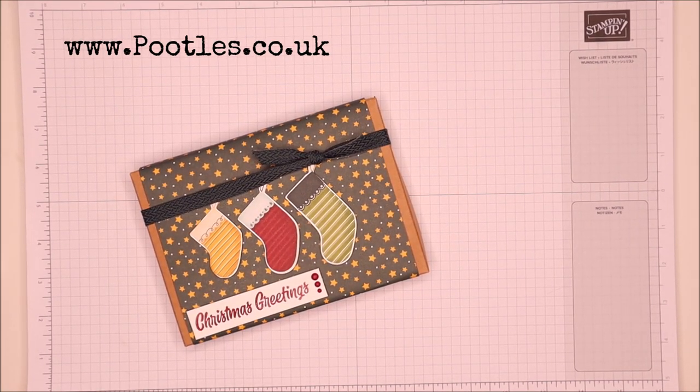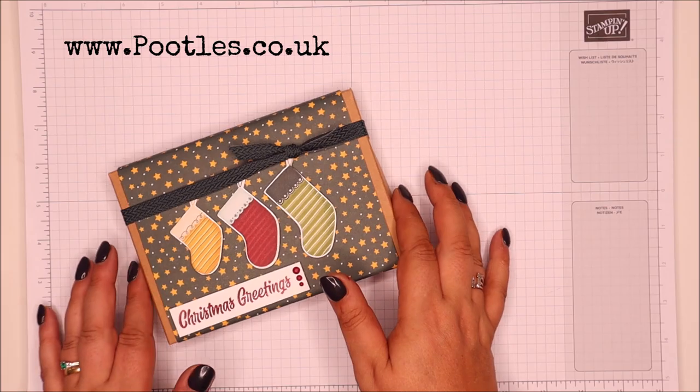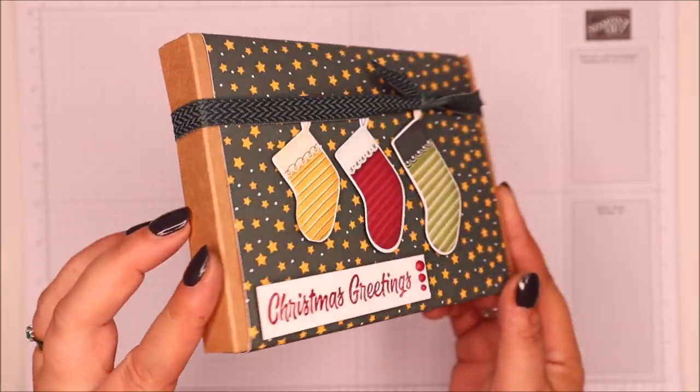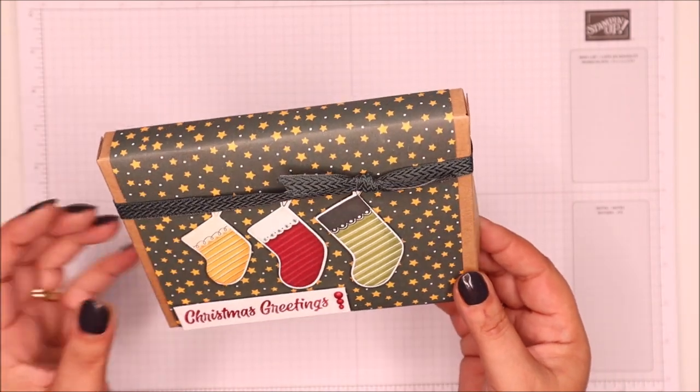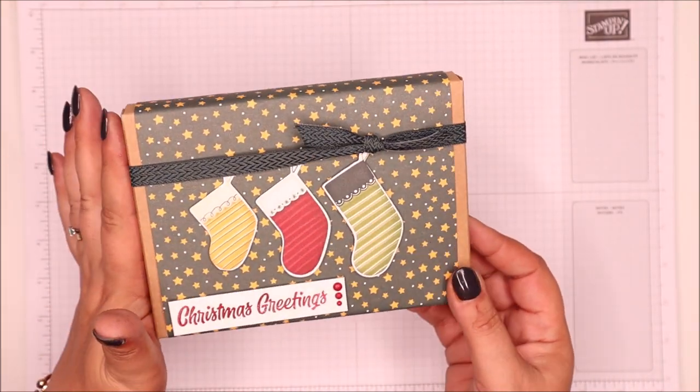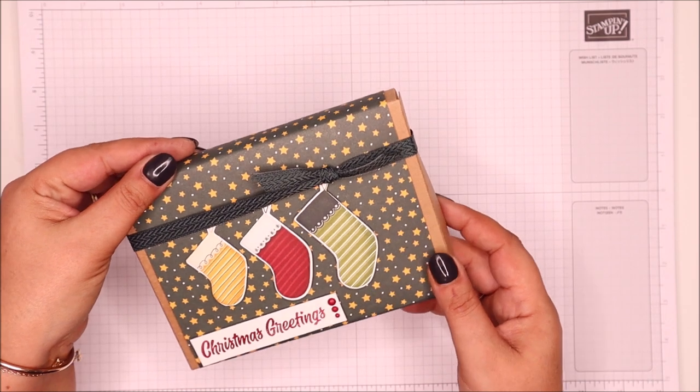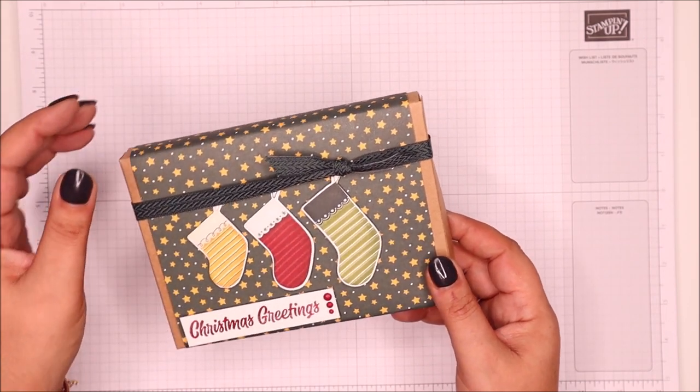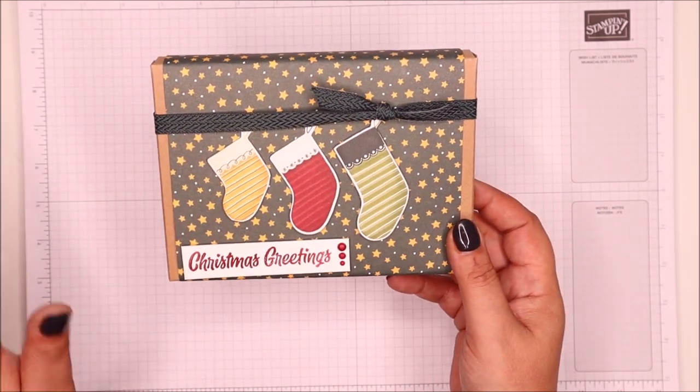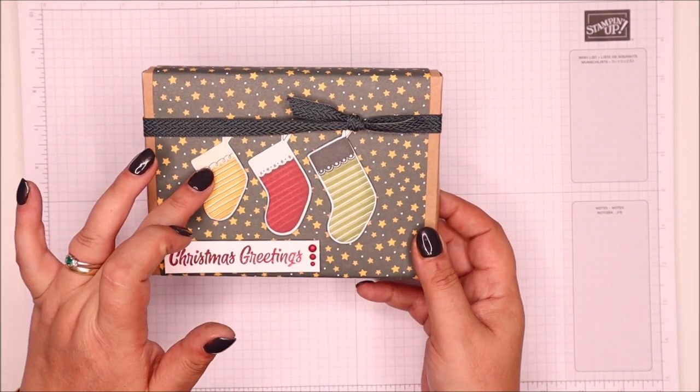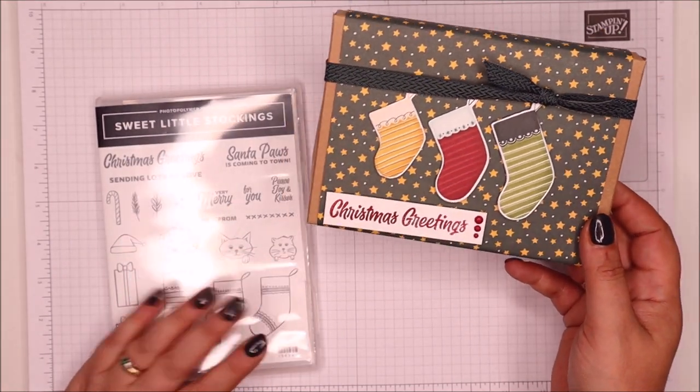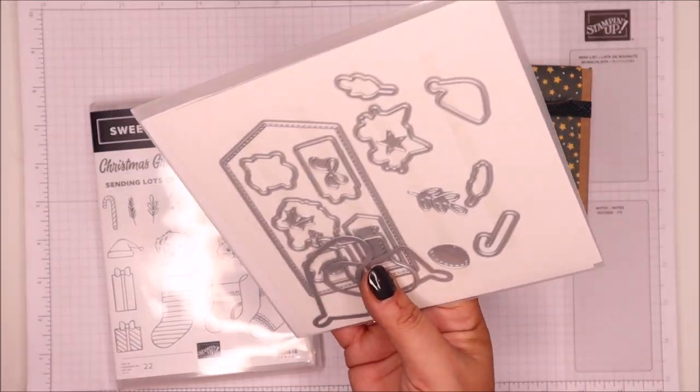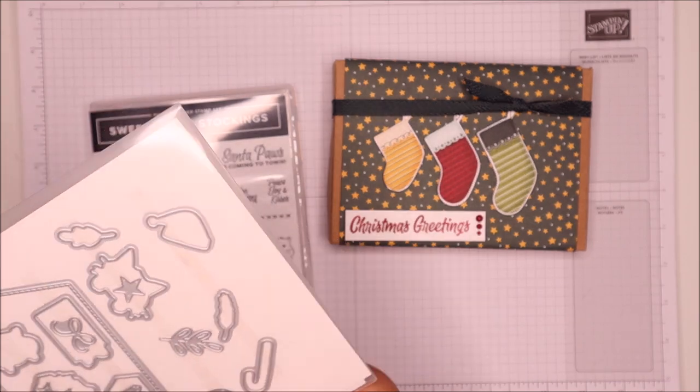Hi there, it's Sam from Pootles.co.uk. Thank you very much for joining me today. Today's project is this one, and I haven't made the majority of it. This is one of our new little boxes that is in the mini catalogue. This is the Sweet Stockings paper. They have been die-cut straight from the paper, and I've just done a tiny little bit of stamping with the Sweet Little Stockings stamp set, but mostly dies and a box pre-made.